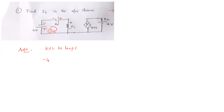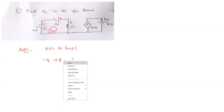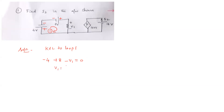Then we come to the 8-volt source — it is increasing because we are moving from negative to positive, so it is plus 8 volts. Then we come to V1, which goes from positive terminal to negative terminal, so it is decreasing voltage, and I will write minus V1. By KVL, the sum of voltages equals zero, so V1 equals plus 4 volts.